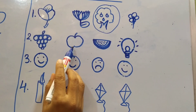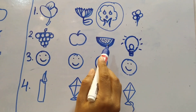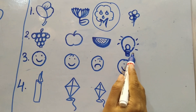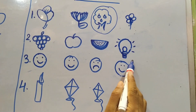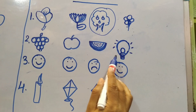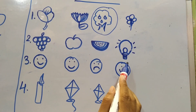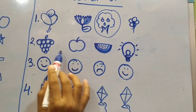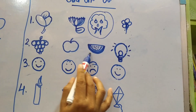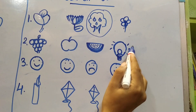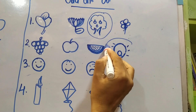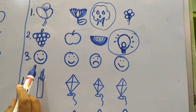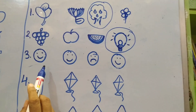Now look at number two: grapes, apple, watermelon, and then one bulb. So which one is different? These are all fruits. Is this a fruit? No. So this bulb becomes the odd one out.